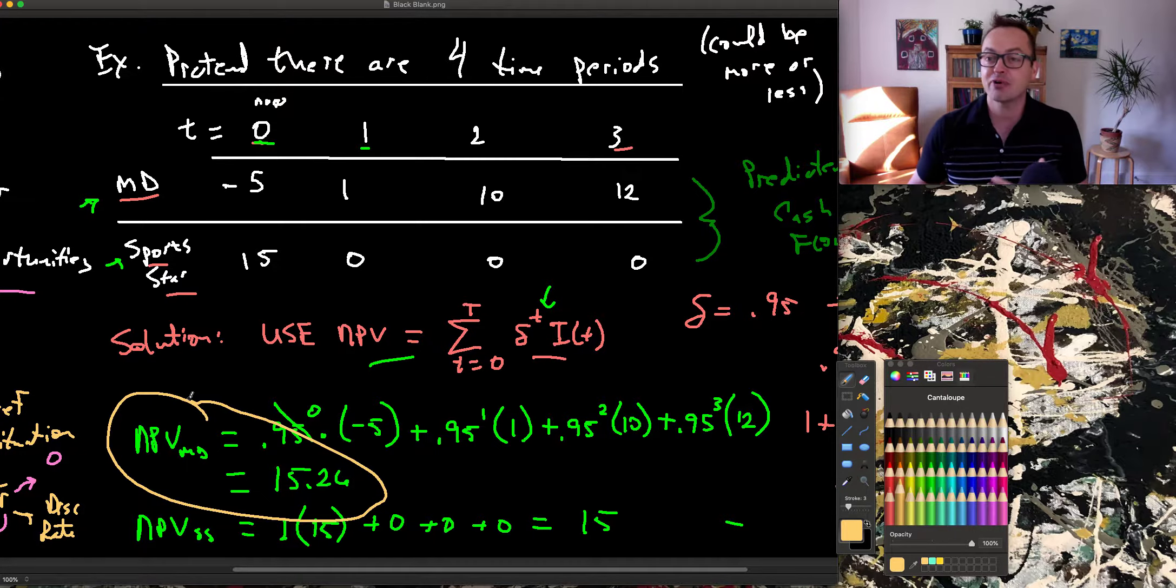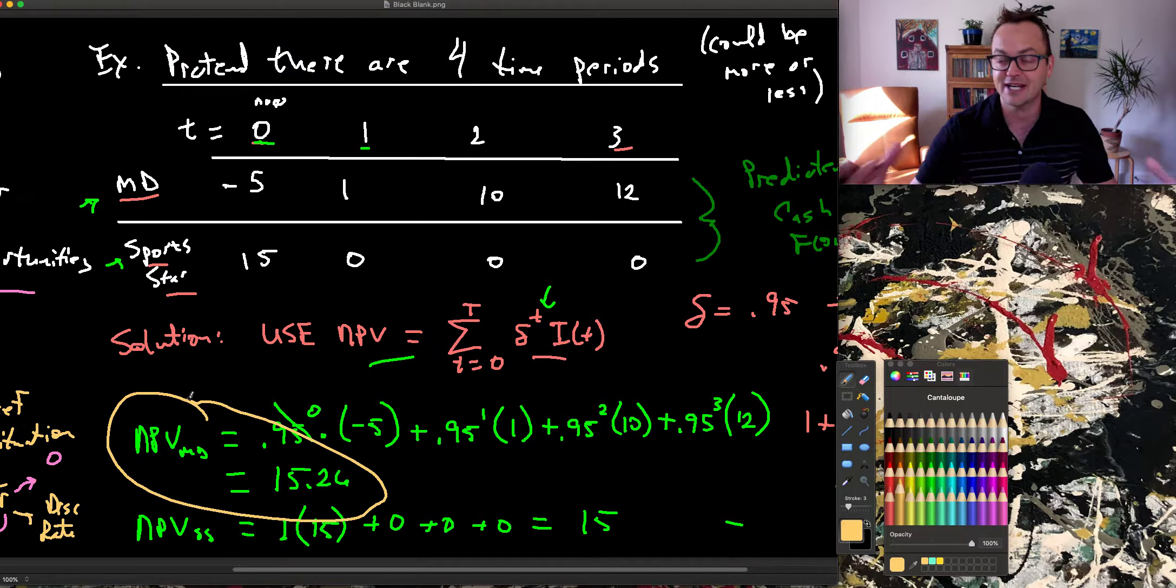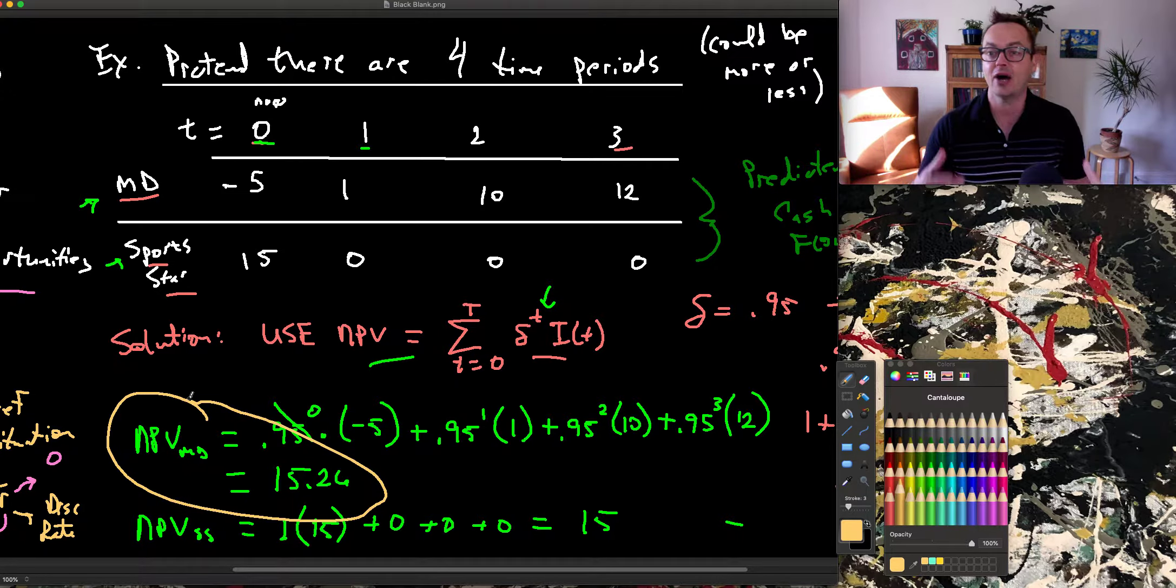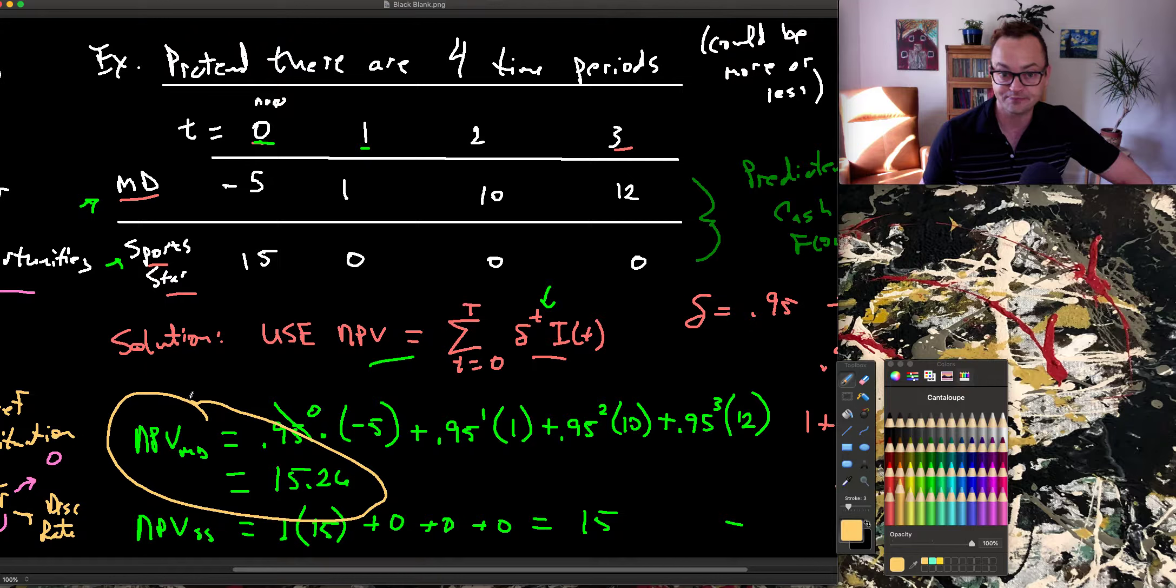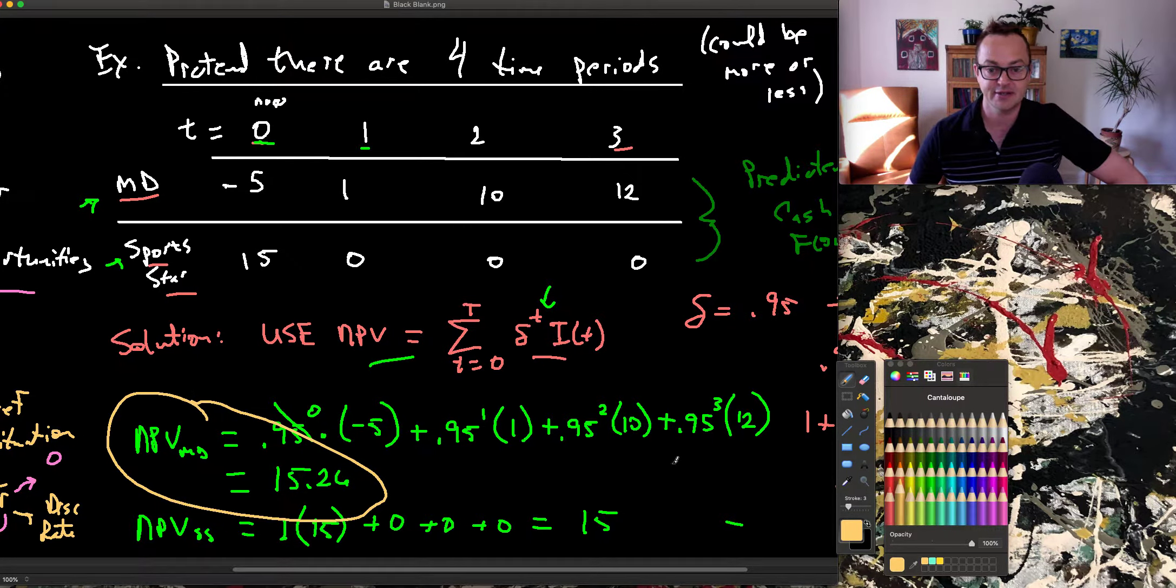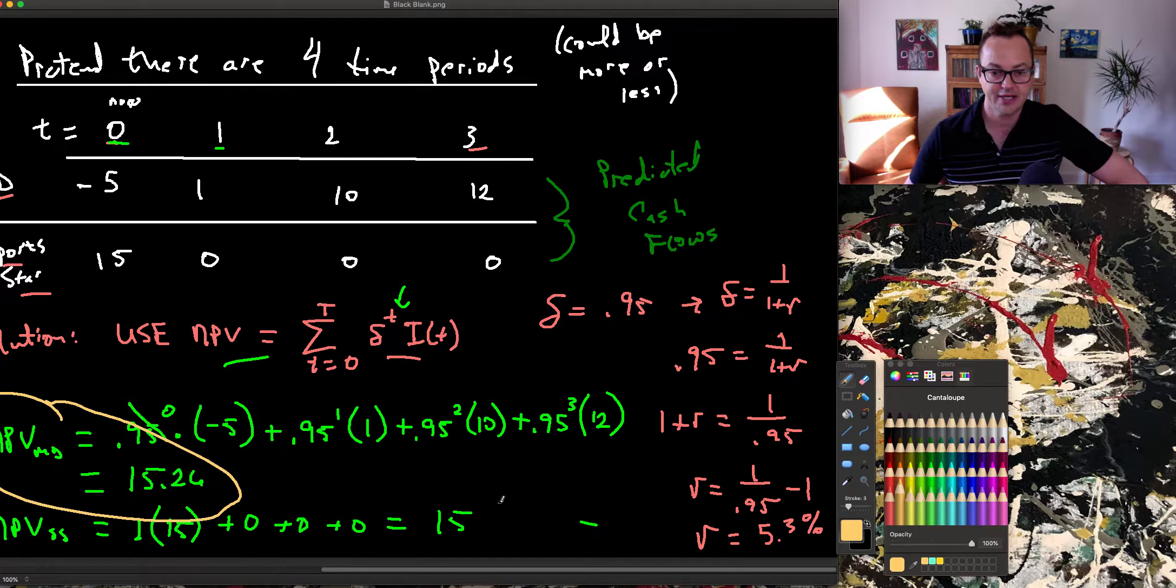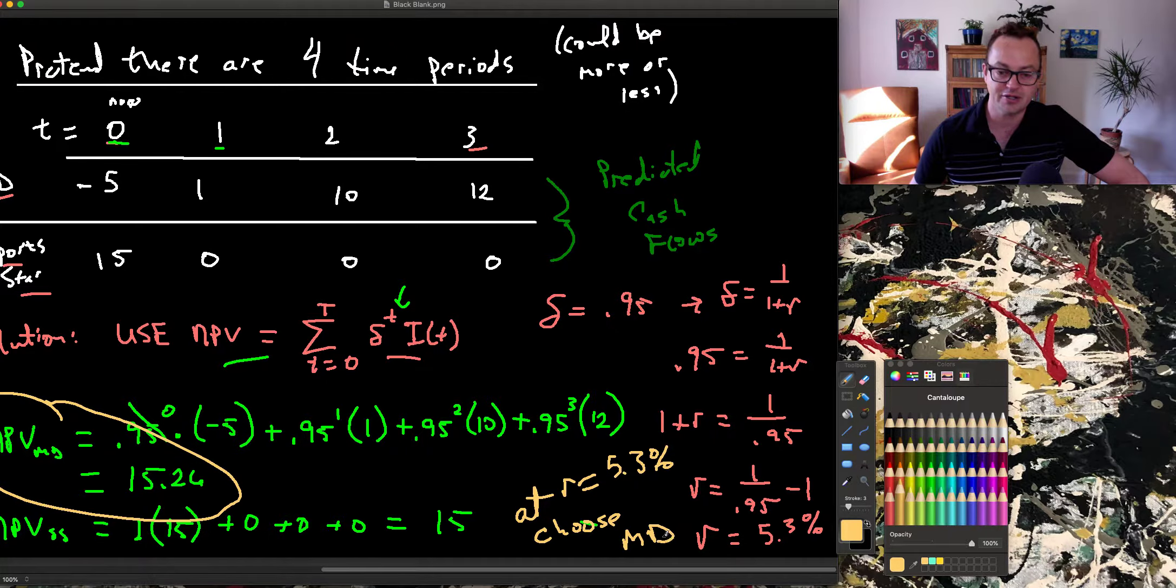So my net present value, my lifetime benefits, outweigh those of the lifetime benefits of a sports star in this comparison. So at rate R equal 5.3%, I choose becoming a medical doctor.